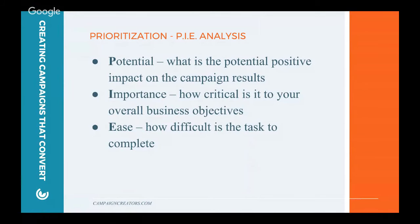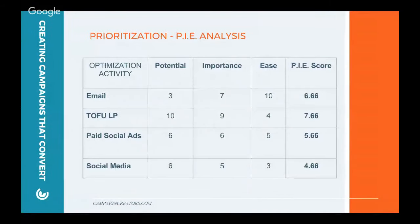The PI analysis is borrowed a bit from the conversion rate optimization world. After a campaign runs for a period of time, Nick and I sit down and say, how did we perform? Then there's organizing and prioritizing those different elements. This framework focuses on three specific parts: one, potential — what is the potential positive impact on campaign results? Two, importance — how critical is it to your overall business objectives? And three, ease — how difficult is the task to complete? We take the average of all three. Looking at assigning numbers on a scale from zero to ten for each of the potential, importance, and ease criteria — for email, for example, you see a three in the potential category — and then we take the weighted average for the PI score.